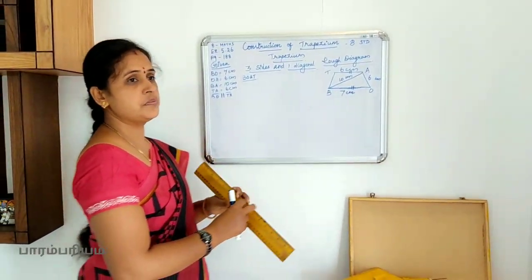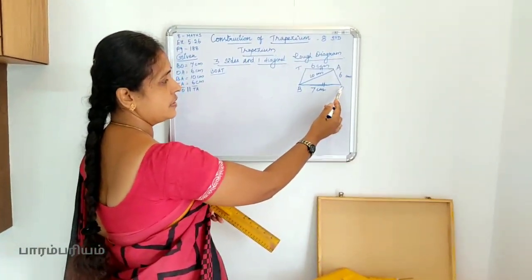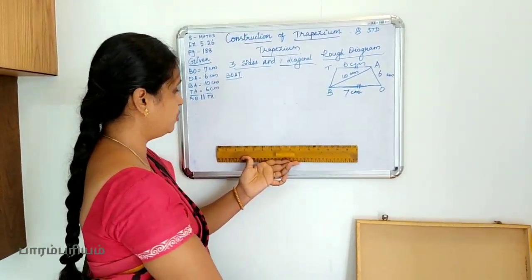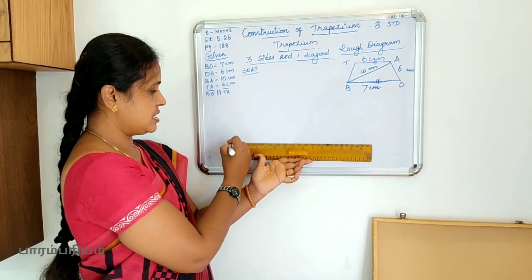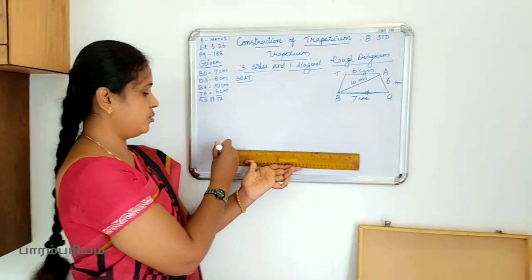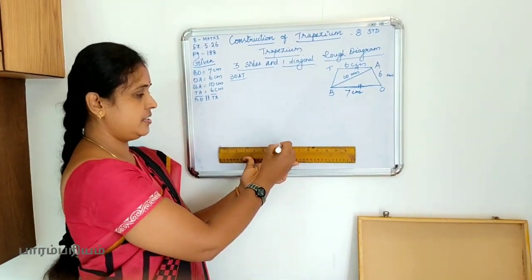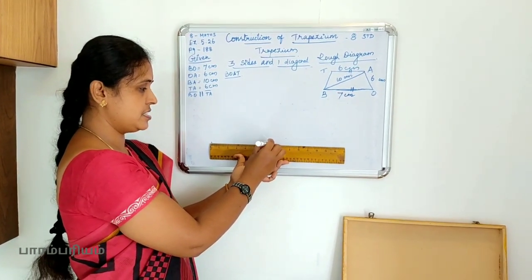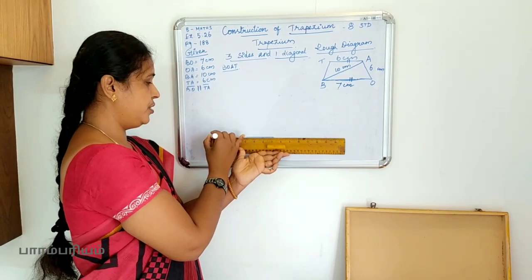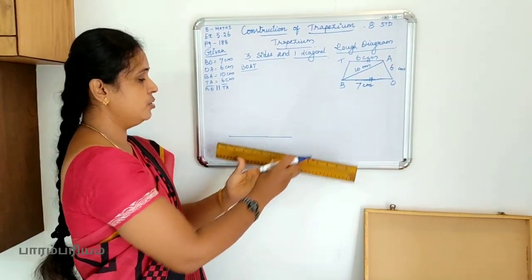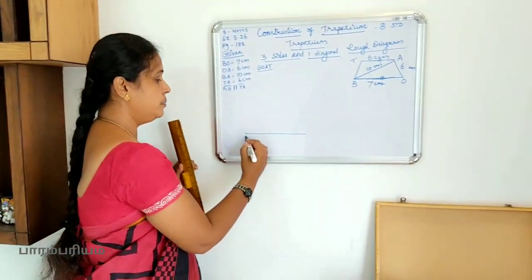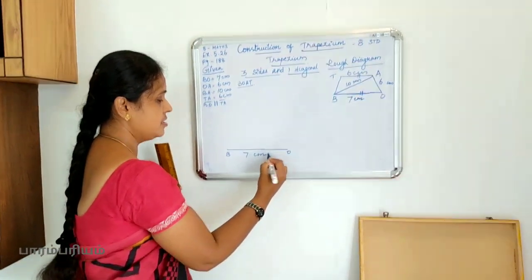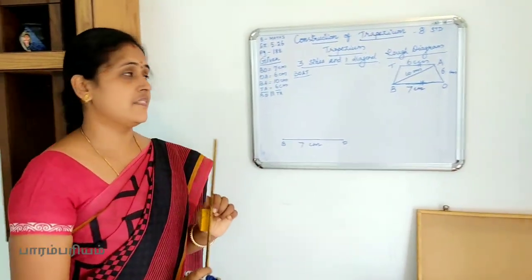Now we are going to draw the base. BO is equal to 7 cm. The first point is O, and we draw a line segment of 7 cm. So BO is the base line segment equal to 7 cm.